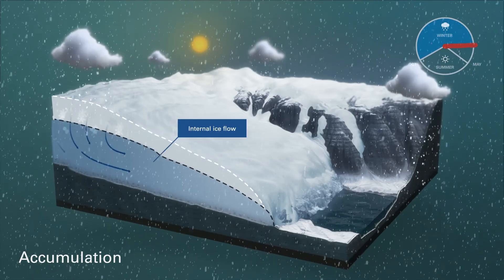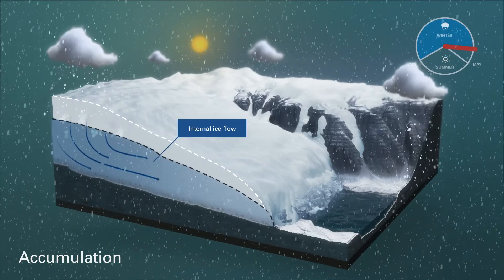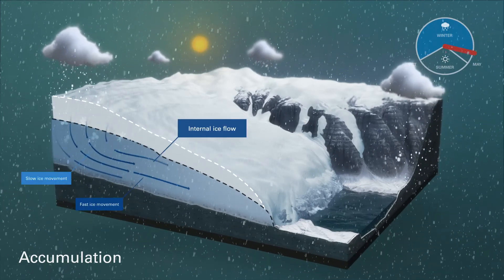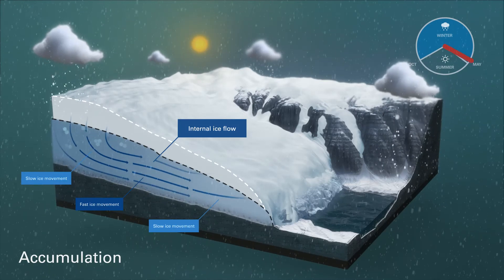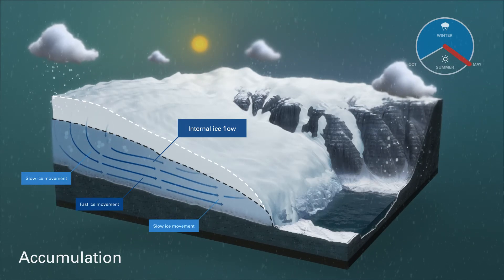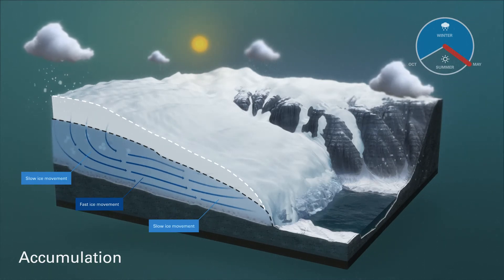The internal flow and downhill slippage never stop. The glacier moves under its own weight, displacing mass towards its lower margins.